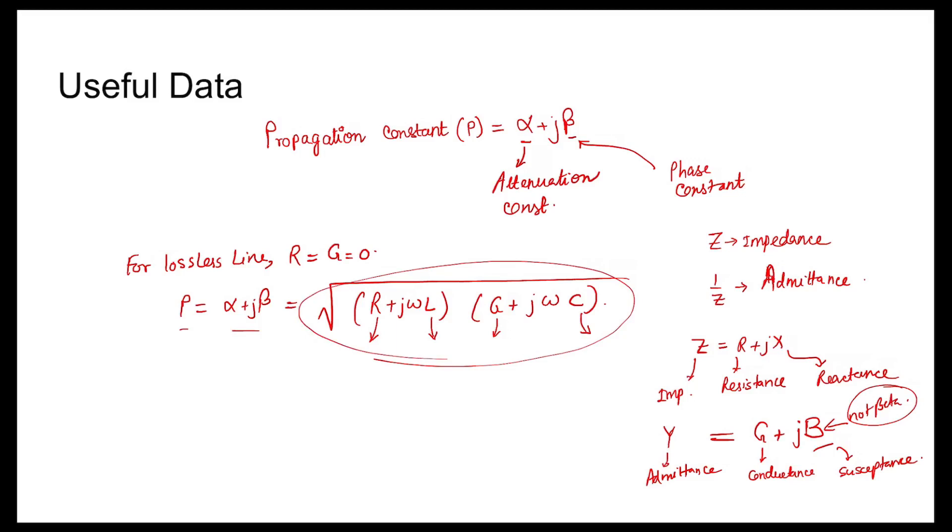Characteristic impedance is denoted by Z₀, and Z₀ is given by √((R + jωL)/(G + jωC)). Now using this, you can solve the problem.